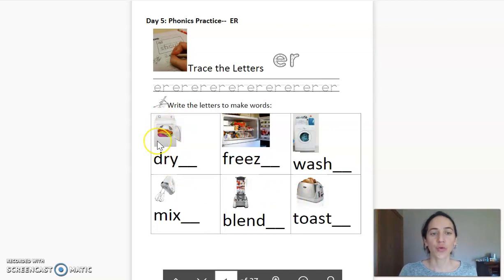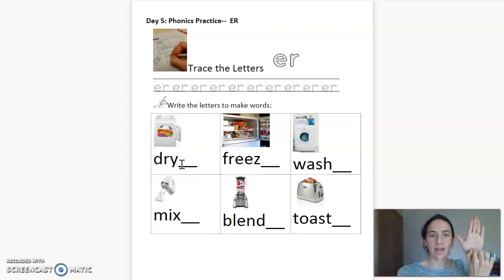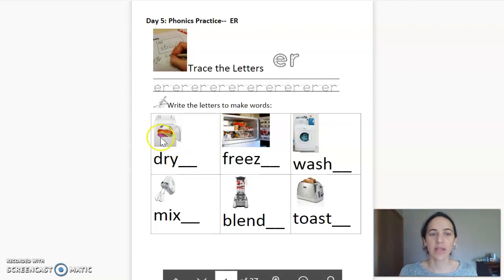This is a dryer. Dry. Please write ER on your papers. Repeat after me. Dryer. Good. This is where we can dry our clothes.